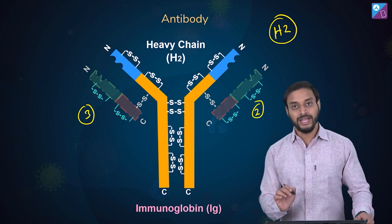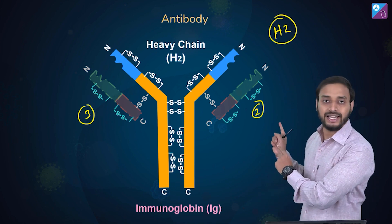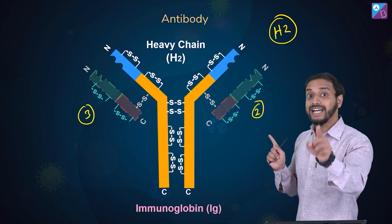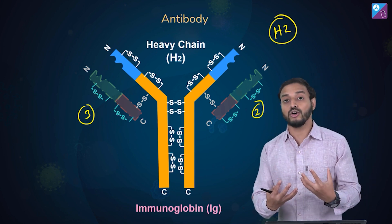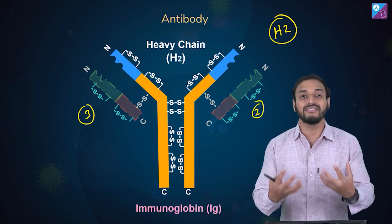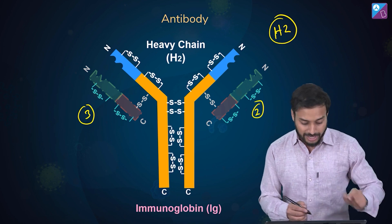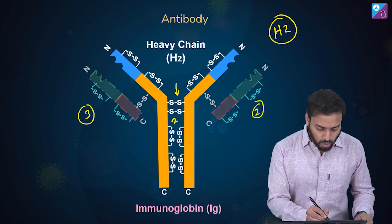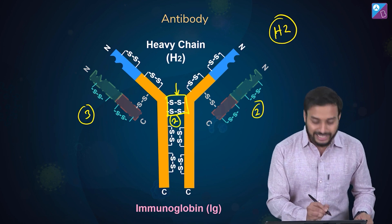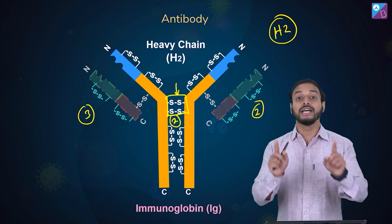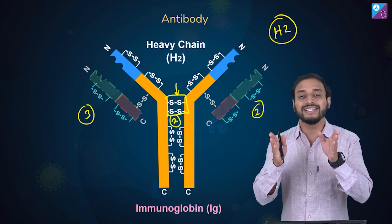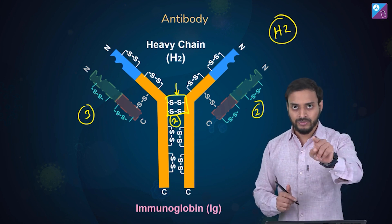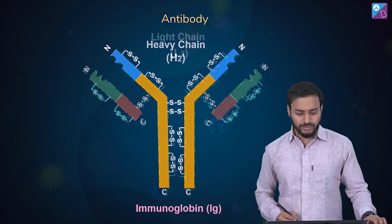These two heavy chains are linked together by disulfide bonds, also called disulfide bridges. Please note: there are two such disulfide linkages joining and keeping these heavy chains intact.